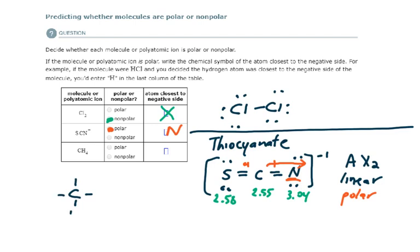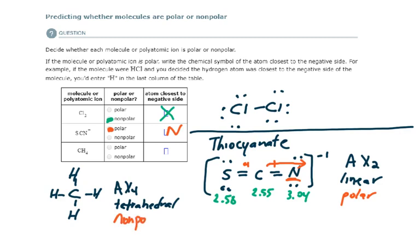Let's draw methane. Let's write its AX notation — it would be AX4, no lone pairs. Going to the chart, AX4 with no lone pairs gives an electron domain and molecular geometry of tetrahedral. And this would be a non-polar molecule.